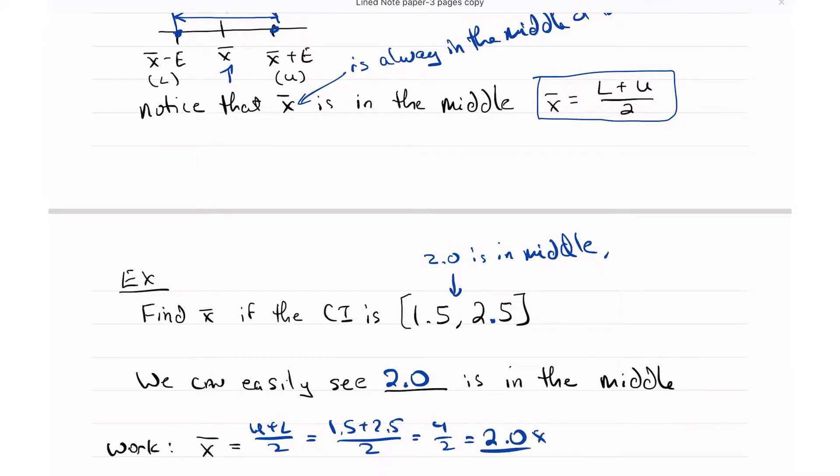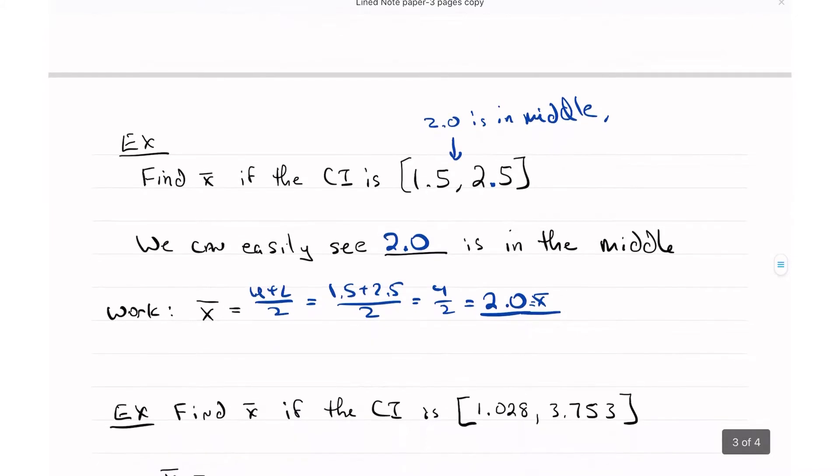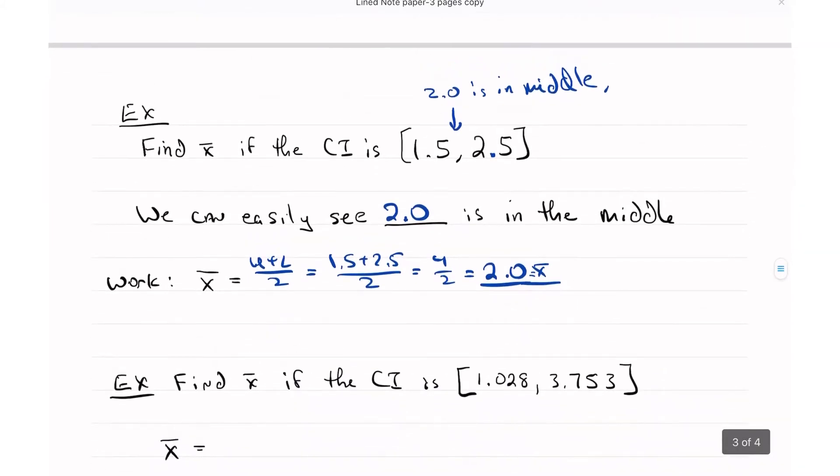So this is equal to X bar. But what if it's a little bit messier? What if we need to find this? Then we'd have 1.028 plus 3.753 divided by 2, and I don't know about you, but I need to use my calculator.